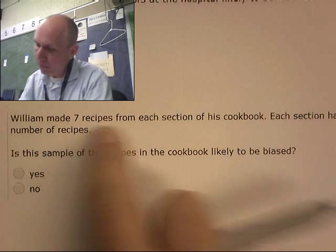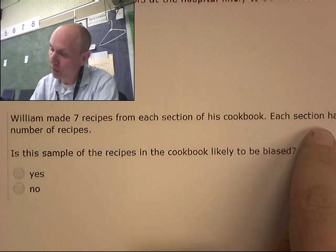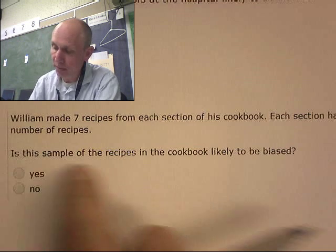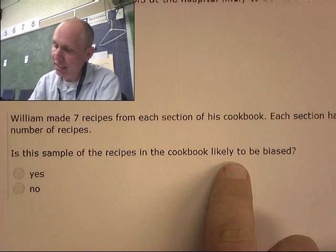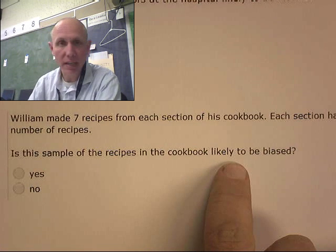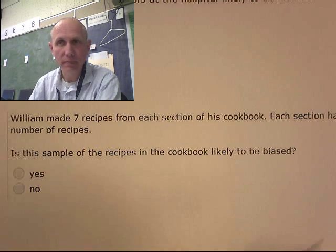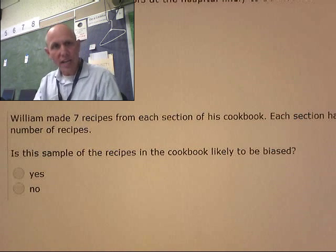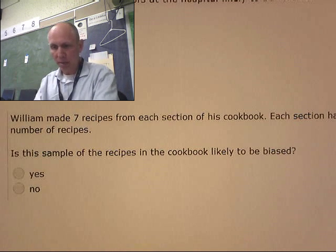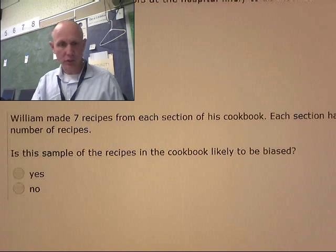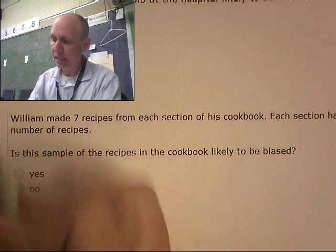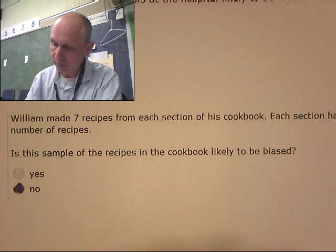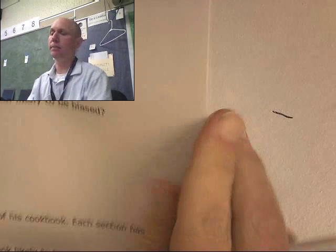William made seven recipes from each section of his cookbook. Each section has an equal number of recipes. Is this sample of recipes likely to be biased? Well, this kind of sounds random, doesn't it? He's randomly choosing recipes out of a bunch of different sections. That's not biased — that is not biased.